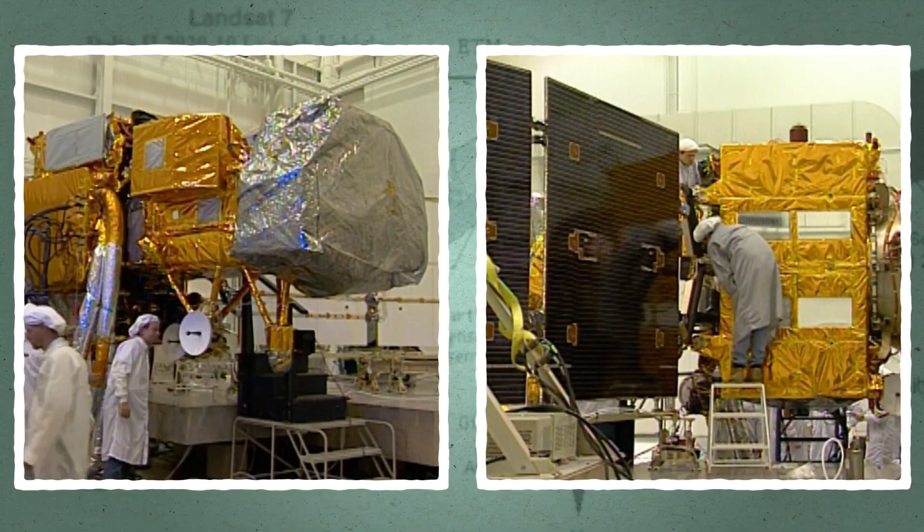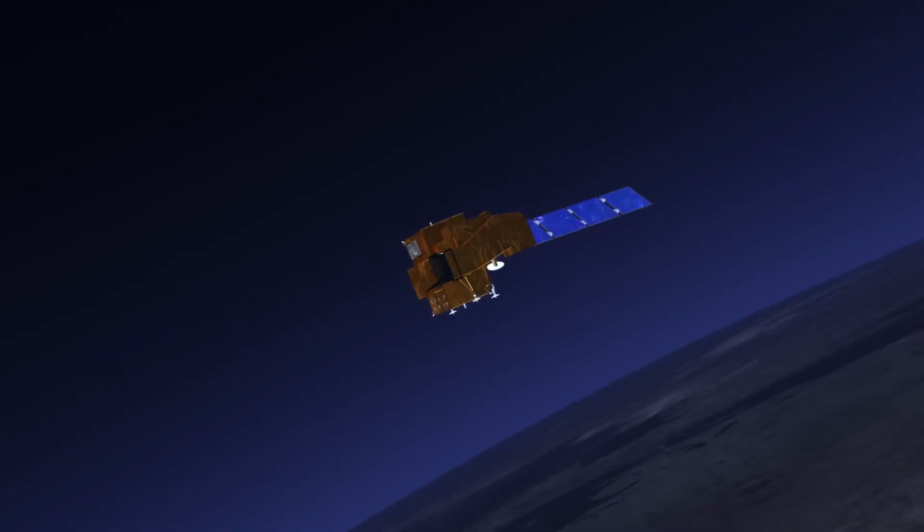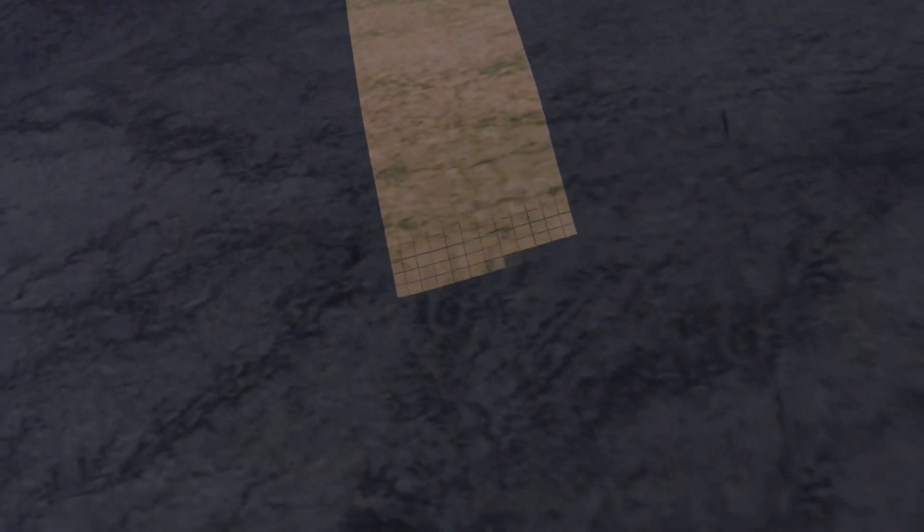Six years later, the team launched Landsat 7. Liftoff of the Delta II rocket with the advanced... One of the most technologically advanced Earth-observing satellites of its generation. Still in use today.